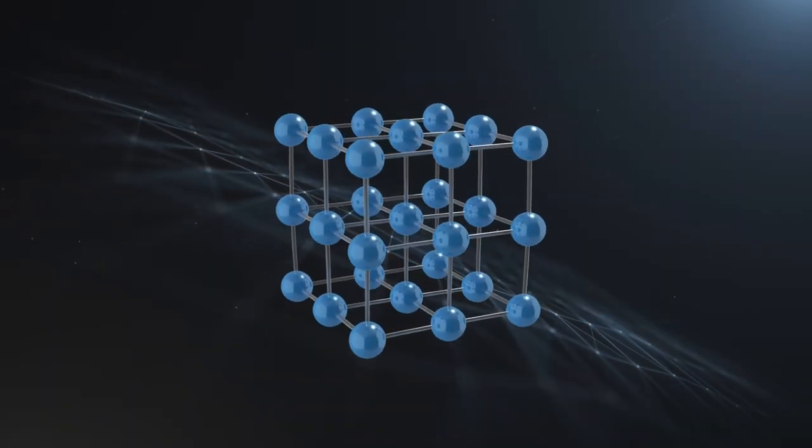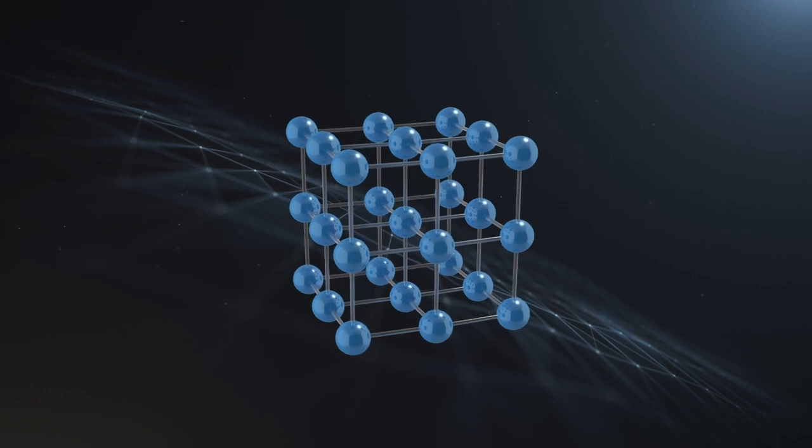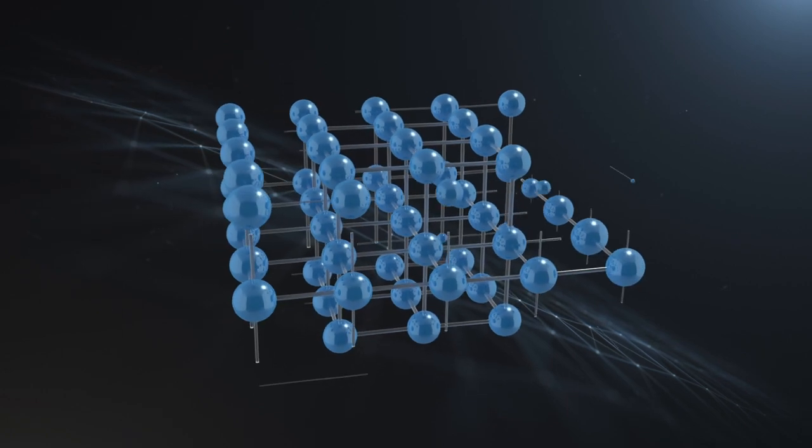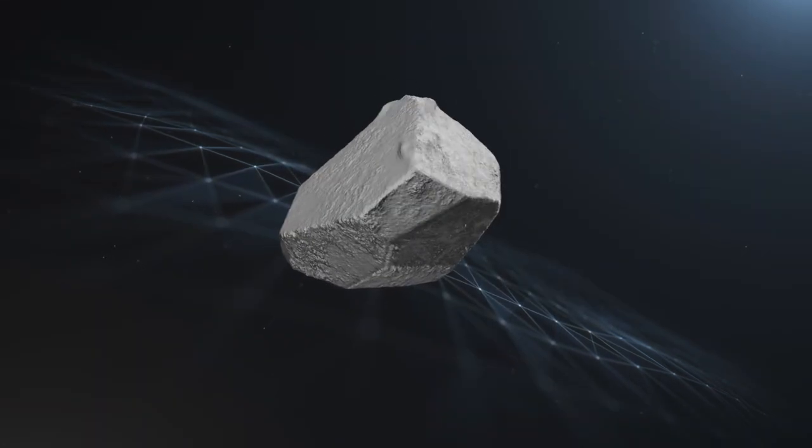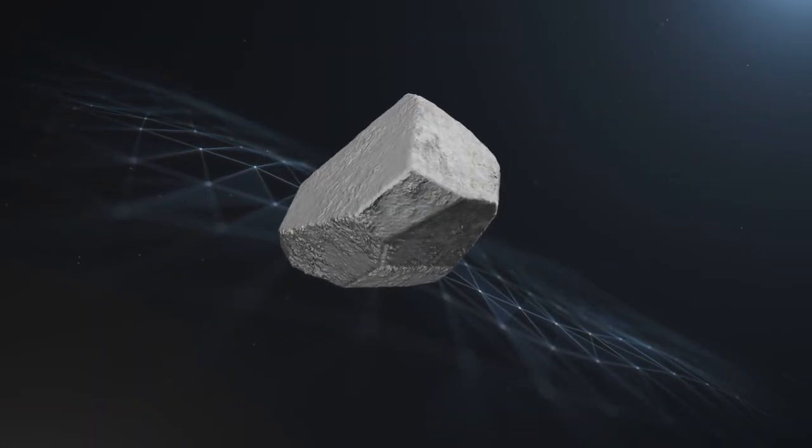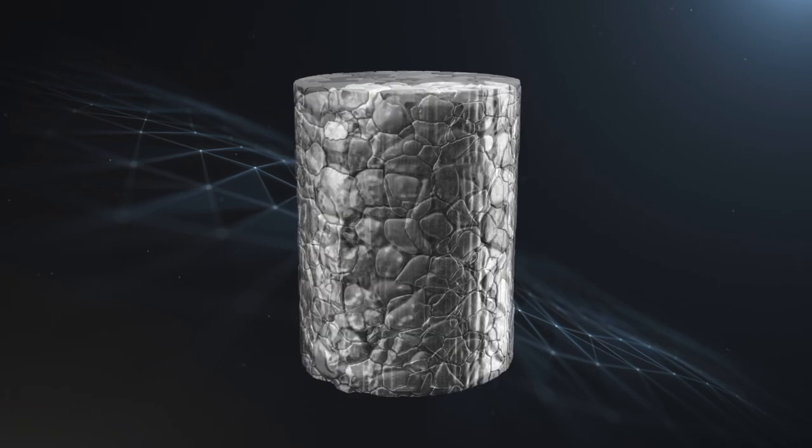In solids, atoms are ordered into a unit cell, called a lattice. Moving up a level, stacks of lattices form grains. Their size, shape and crystallographic orientation define the properties of a given material.